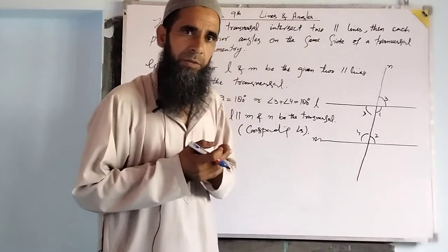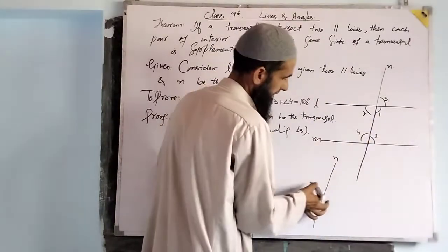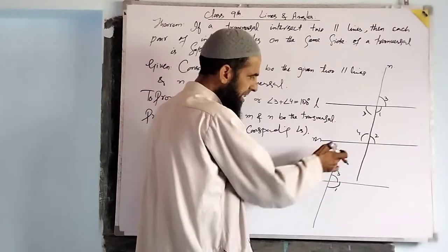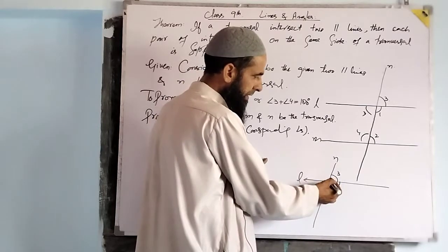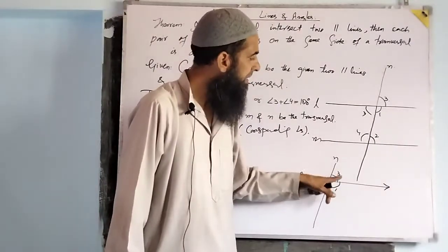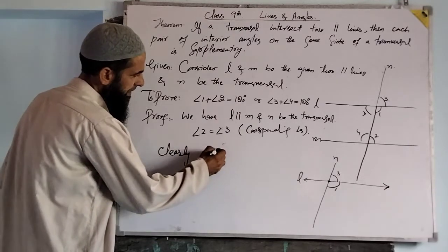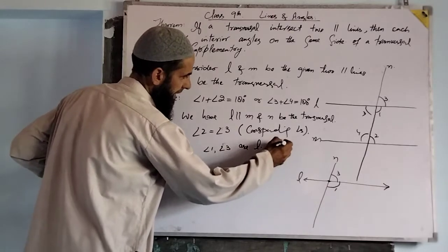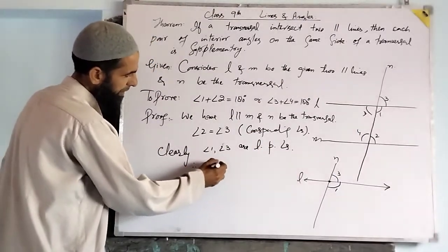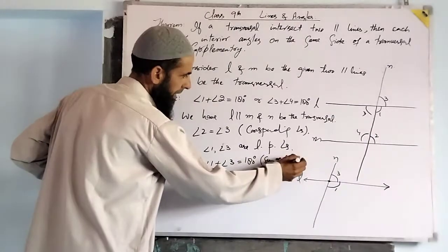Here is the concept: if we have line L and the transversal N, angle three and angle one are formed. Clearly, angle one and angle three form a linear pair — these are linear pair angles. Therefore, angle one plus angle three equals 180, because the sum of linear pair angles is 180.